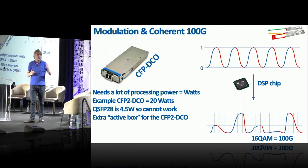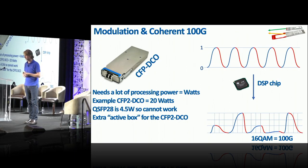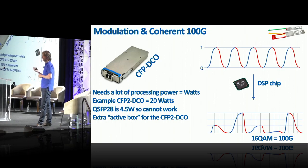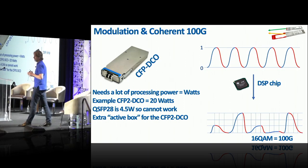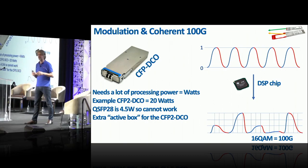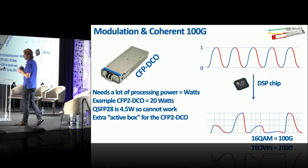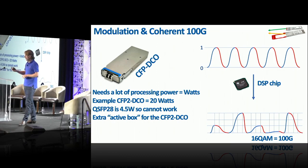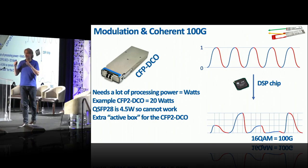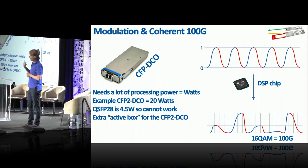These modulation techniques are used in coherent 100G optics, but they require a DSP chip, which needs a lot of power. For example, the CFP2-DCO needs 20 watts. QSFP28 is what most routers use — Cisco, Juniper, Ciena — but it's maxed at 4.5 watts. So 16-QAM modulation doesn't fit in a QSFP28, and you need an extra box to house a CFP2-DCO.